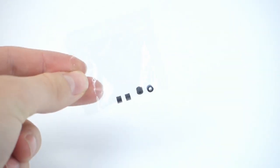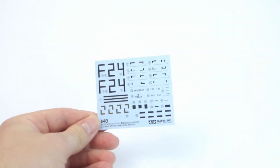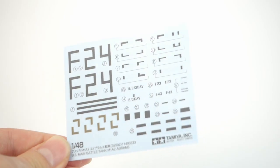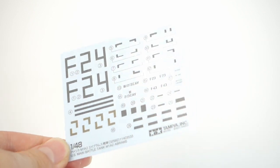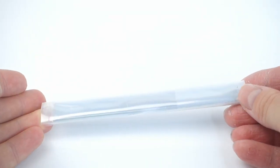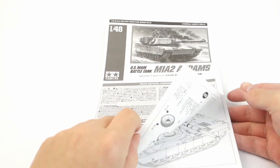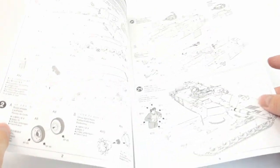The box also contains polycaps for movable parts and decals which are printed very nicely, but I won't be using them. There is also the obligatory metal weight and instruction manual which shows pretty clearly the whole process of assembling the model.